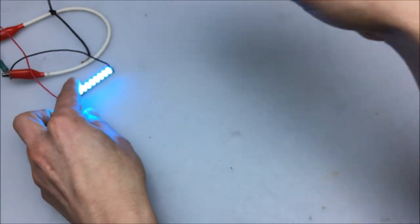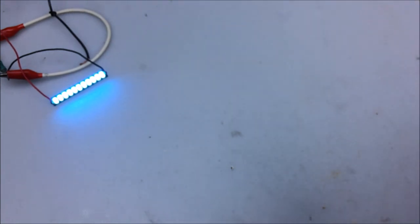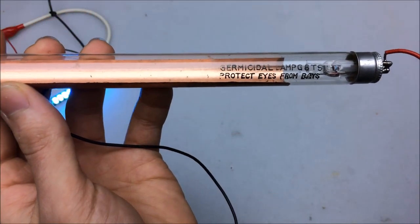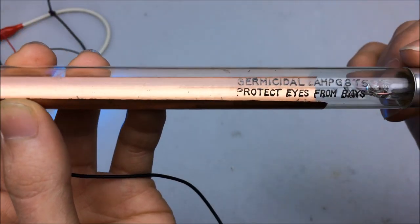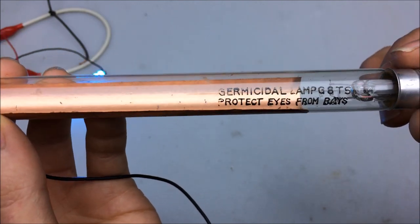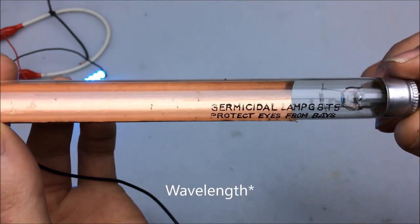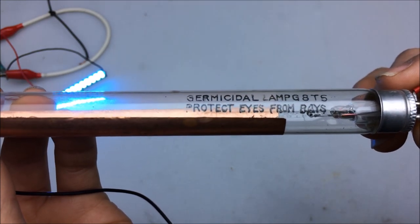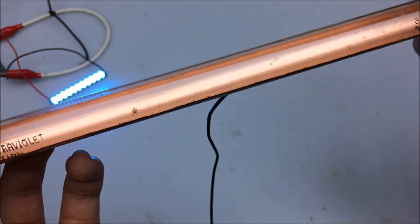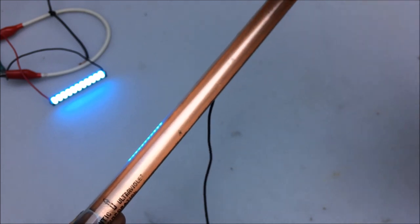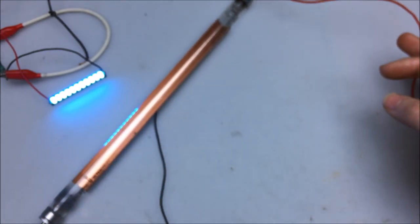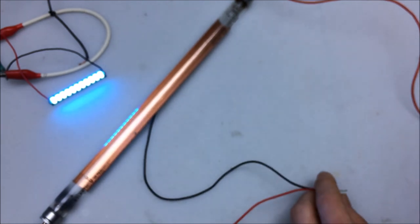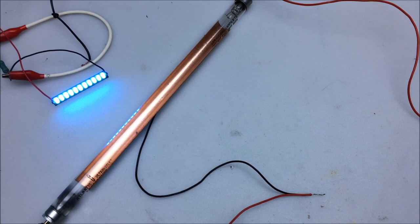So I have here a lamp that uses mercury vapor. Inside we have some mercury and when the mercury is excited it produces UVC light at about 254 nanometers which is in the UVC range. This is particularly dangerous because it produces ionizing radiation which can cause cellular damage. There is enough energy to knock electrons off the atoms and cause damage. So it will be very hard on the eyes and it can cause cancer. Let's hook this bulb up and enter the danger zone.